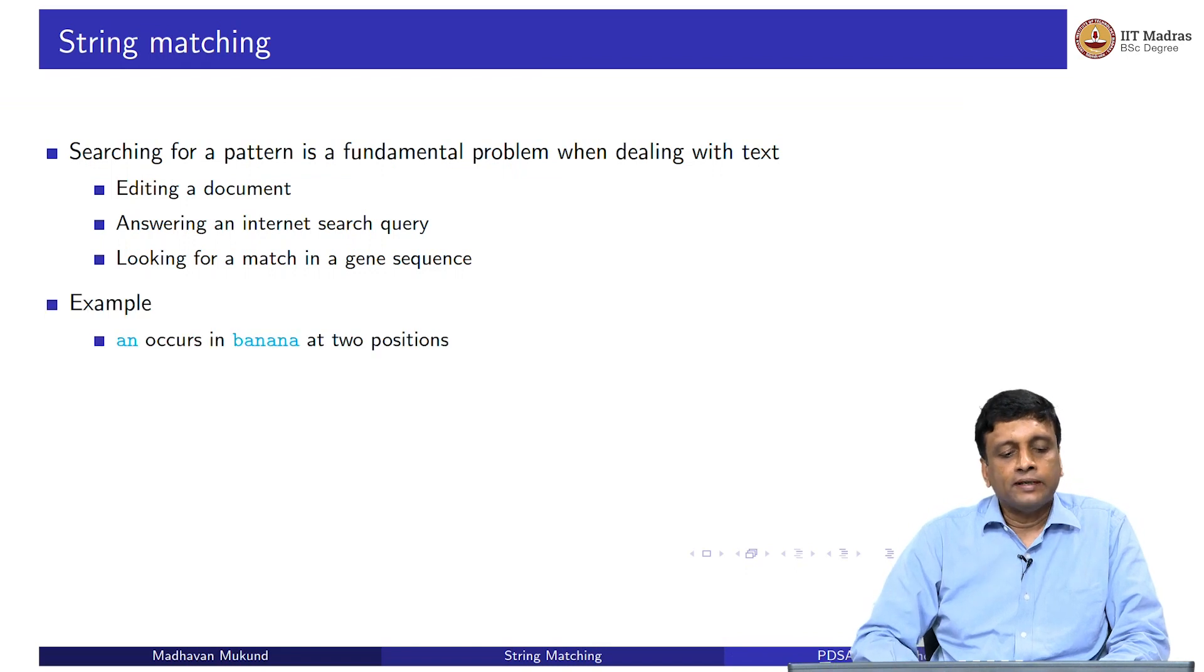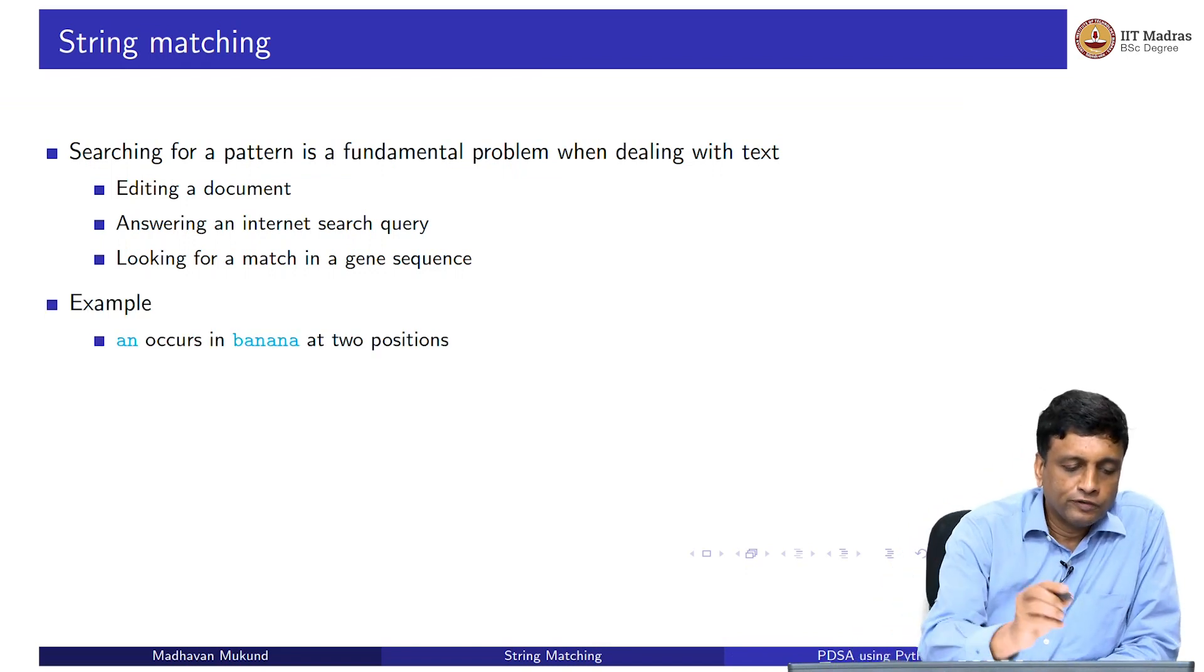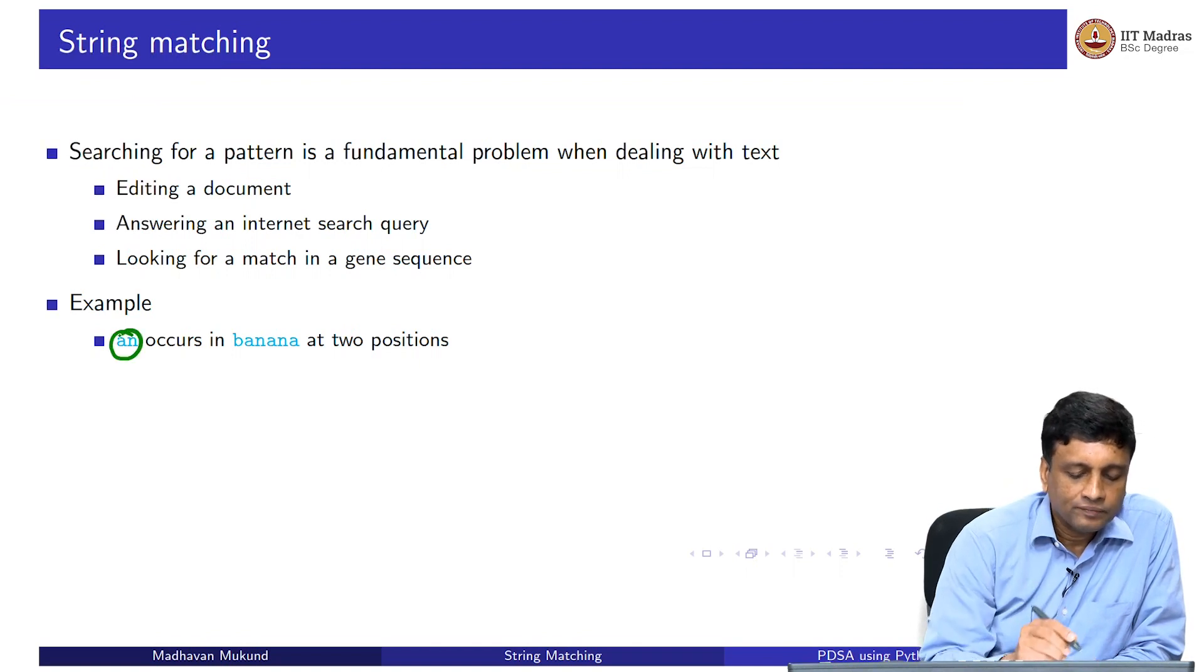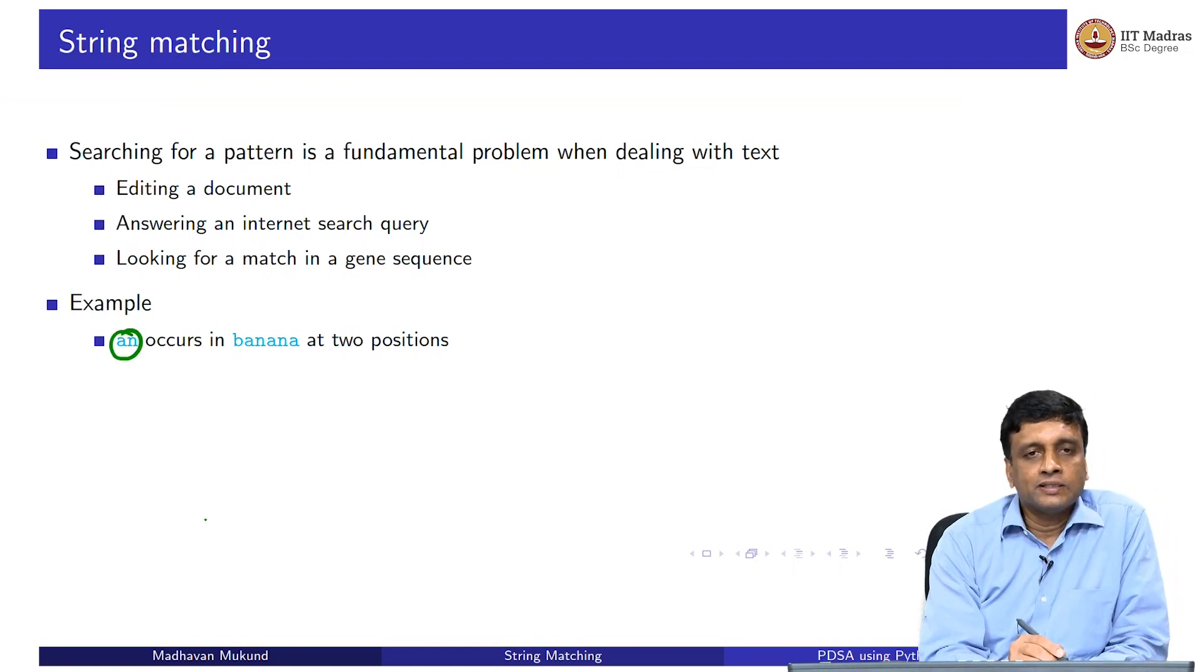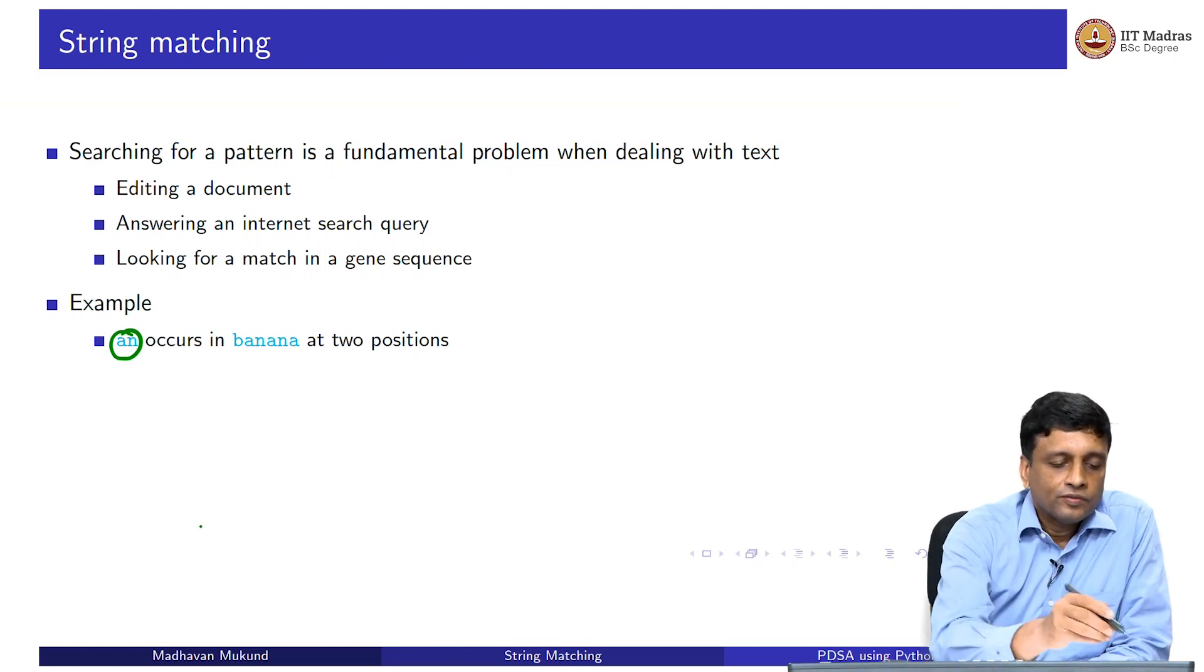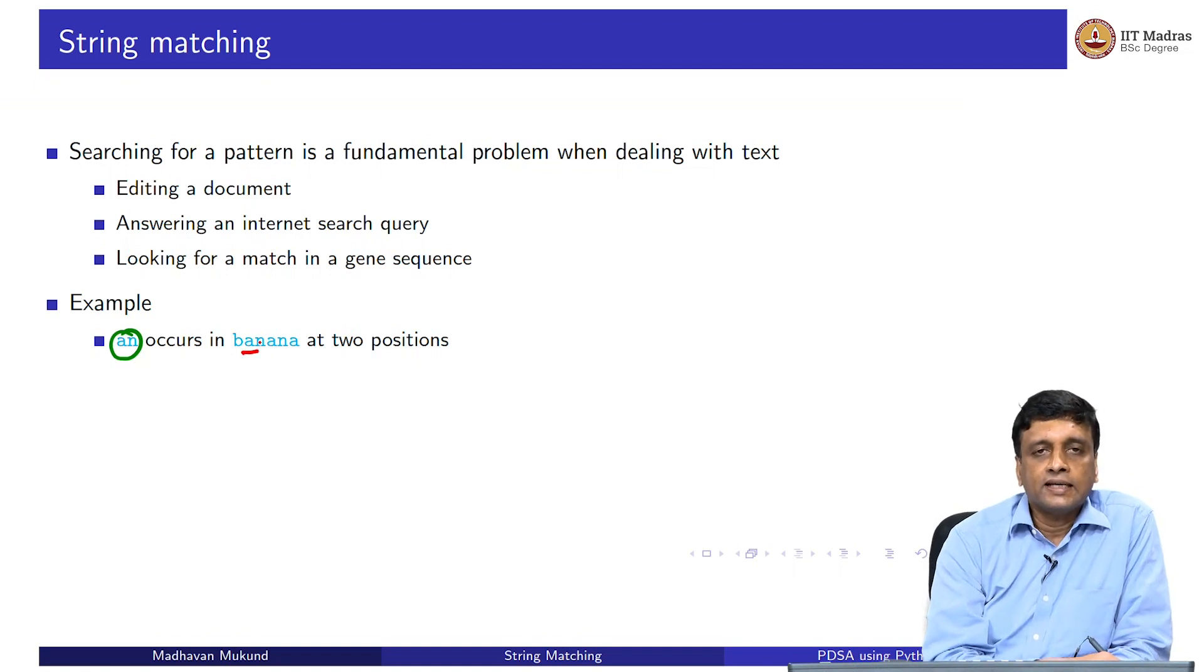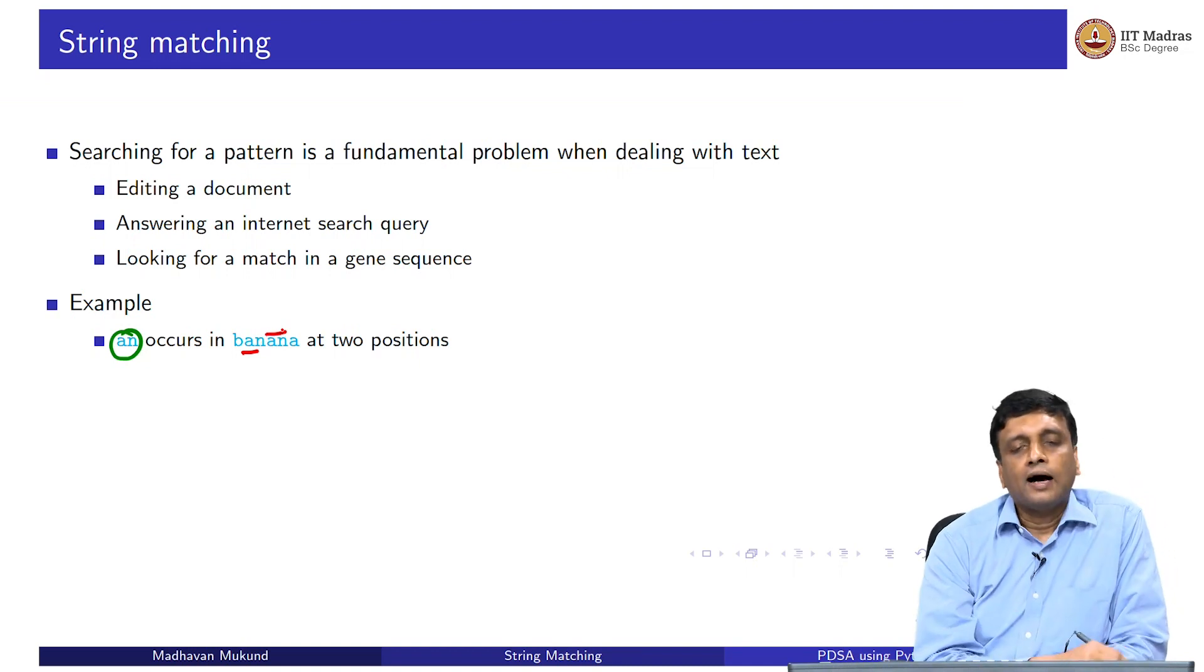If you look at this formally, first let us look at it informally. If you look at, for instance, the pattern to be the word a n, and we have a text which in our case here is just the small word banana, we want to find out where all it matches. We would find for instance that it matches here, there is the first a n which appears right after the b, and then there is one more match after that. There are two positions where this pattern matches this piece of text.